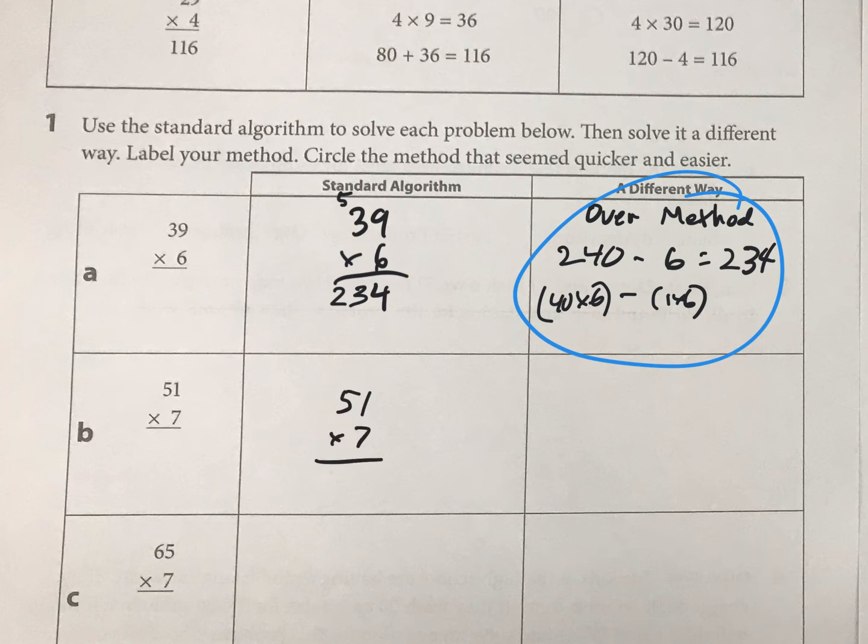Another one, here we go, 51 times 7. So 7 times 1 is 7, 7 times 50 is 350. And there it is. That was pretty quick.